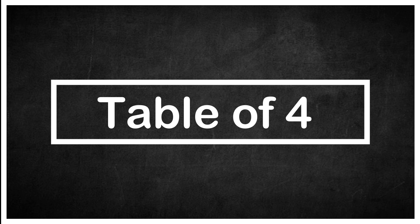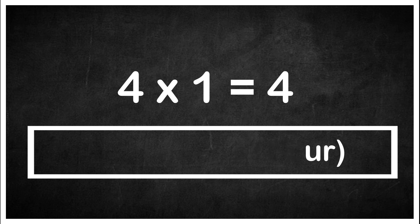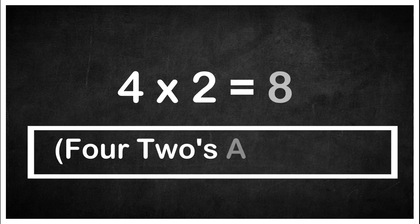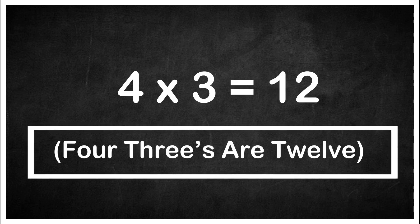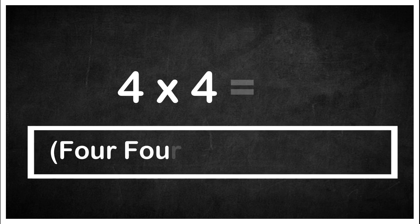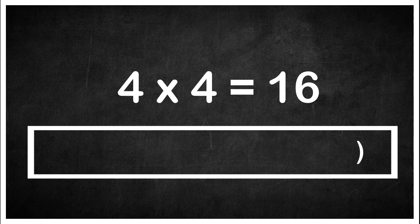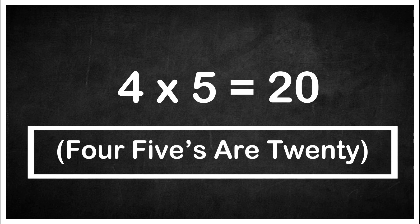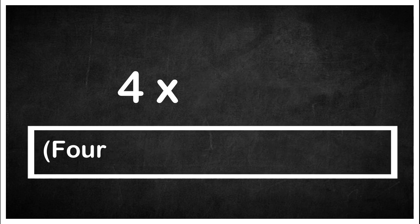Today we will learn about the table of four. Four one is four. Four twos are eight. Four threes are twelve. Four fours are sixteen. Four fives are twenty. Four sixes are twenty-four.